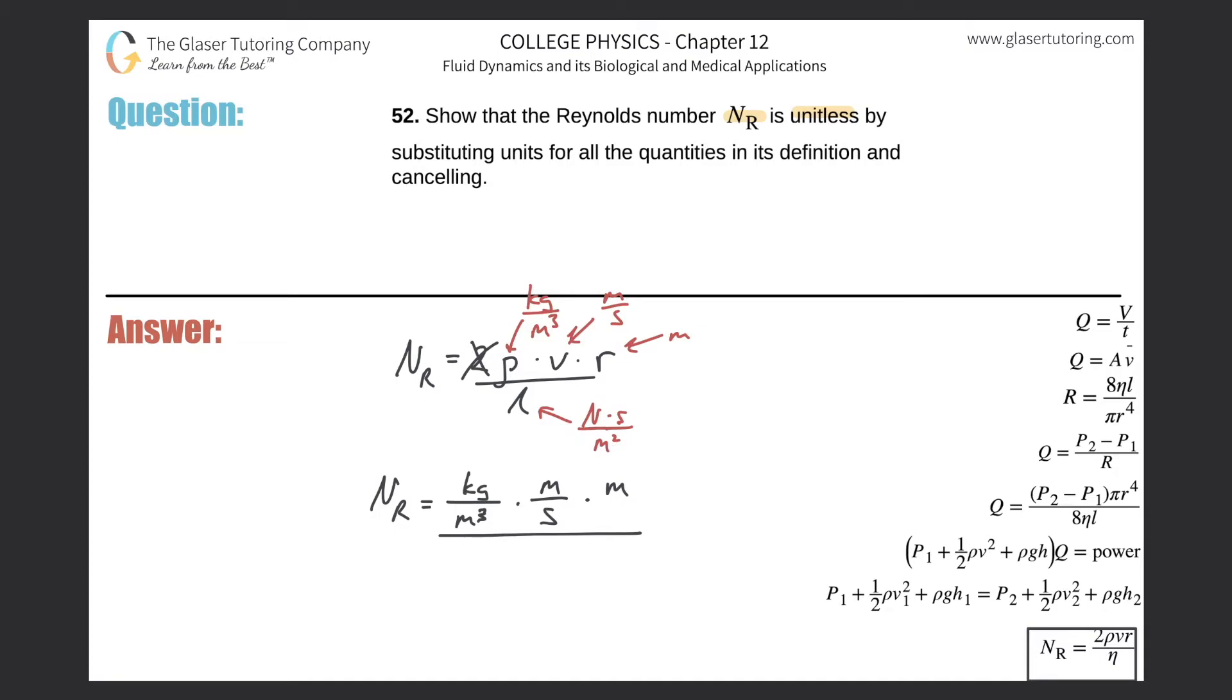Now one other thing I might do here before I actually plug this in is let me break down what a Newton is. So a Newton, remember, is a force and force is equal to ma. So in other words, the Newton value is equivalent to kilogram times meter per second squared. So I'm going to take this and plug that in for the Newton over here first, and then I'm going to plug in that result into here.